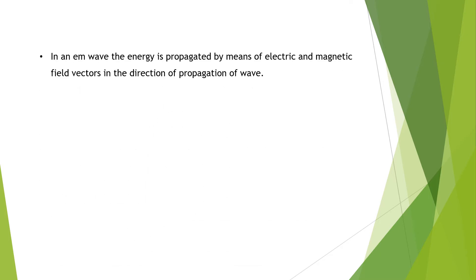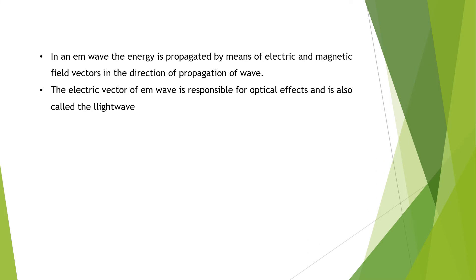In an EM wave, energy is propagated by means of electric and magnetic field vectors in the direction of wave propagation. Also, the electric vector of EM waves is responsible for optical effects and is also called the light wave — so we consider the electric vector as the light wave.